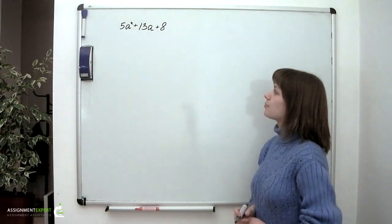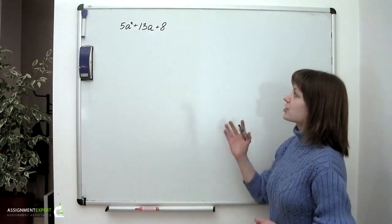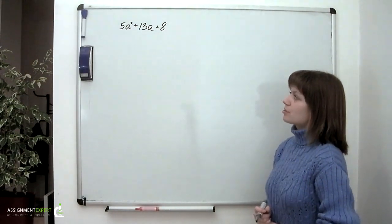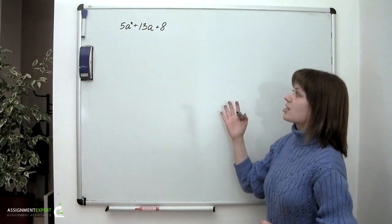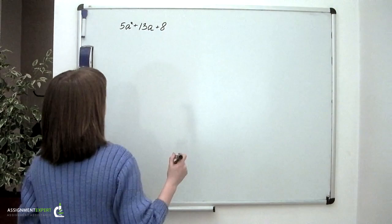We have 5 times squared a plus 13a plus 8, and we were asked to factor this expression completely. One of the possible ways to do this is to try and separate the complete square. So this is what we are about to do right now.